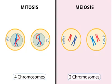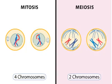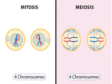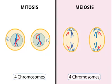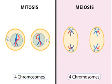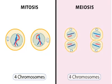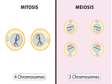A second round of cell division takes place in meiosis. This division is similar to mitosis in that individual chromosomes line up on the metaphase plate. The end result of mitosis is two diploid cells, whereas the end result of meiosis is four haploid cells.